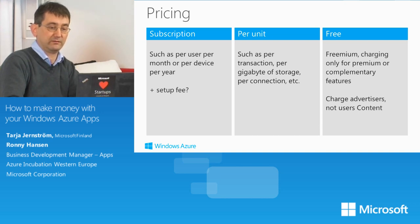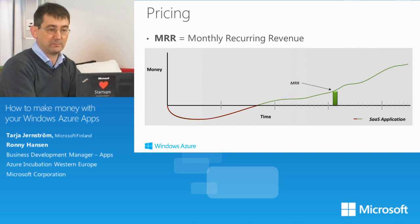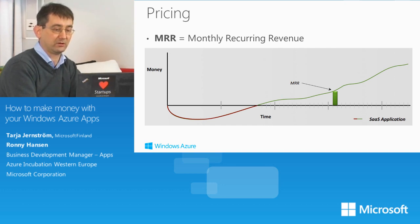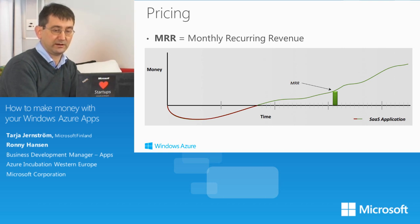When you run a software as a service solution, monthly recurring revenue is important. In this graph, you can see that in the beginning there's a relatively long development time and cost, and it takes longer to break even with software as a service compared to traditional on-premise solutions — mostly because you don't have a large upfront licensing payment, only monthly recurring revenue. But the positive thing is there's a bigger chance for better revenue over time.